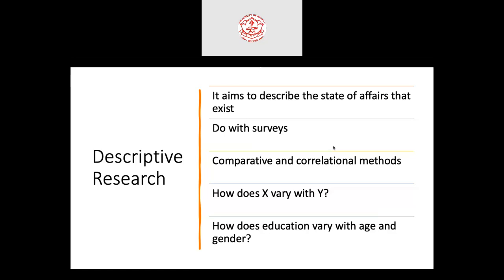For instance: how does X vary with Y? There is an X factor and a Y factor — when X varies, what will be the impact on Y? That is the basic aspect of descriptive research. For example, how does education vary with age and gender? If education increases, it may vary with age and gender. Statistical techniques like comparative and correlational methods are used in descriptive research.